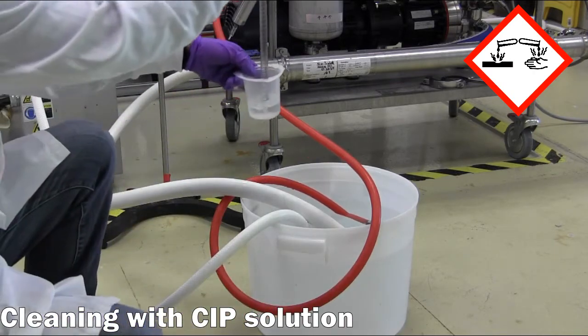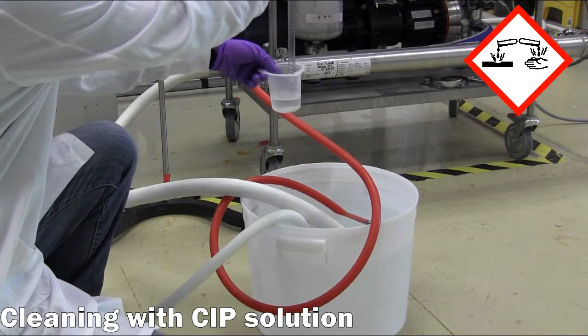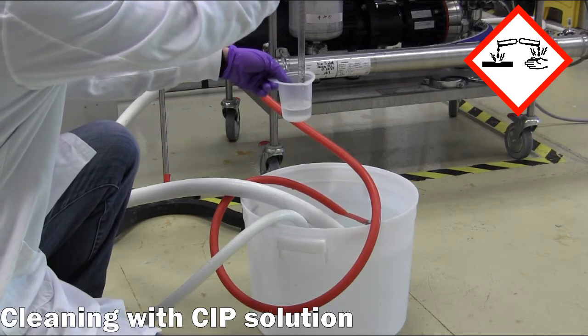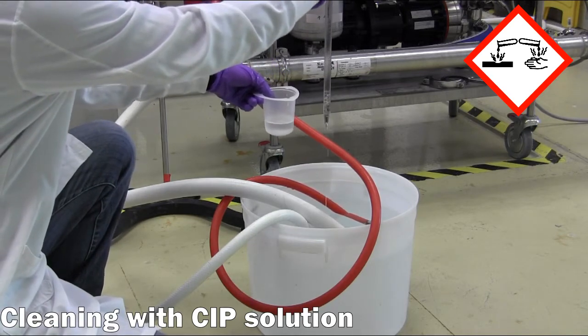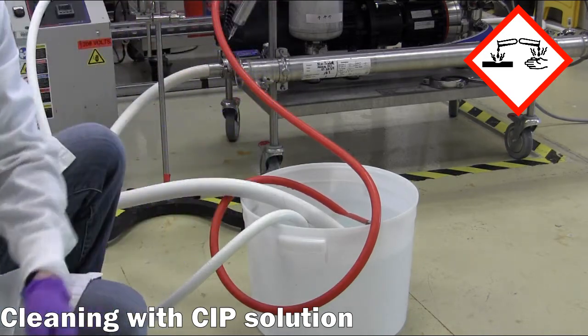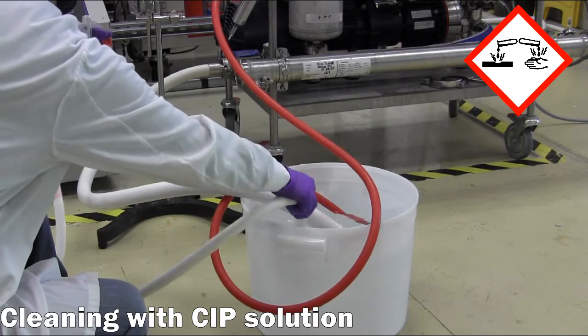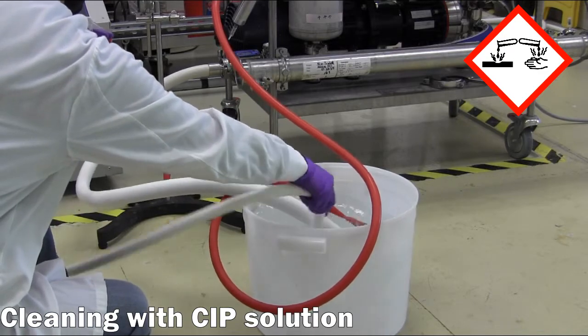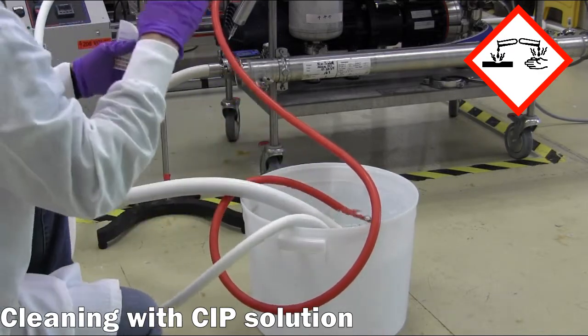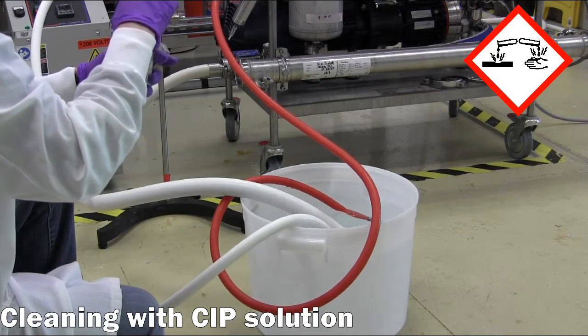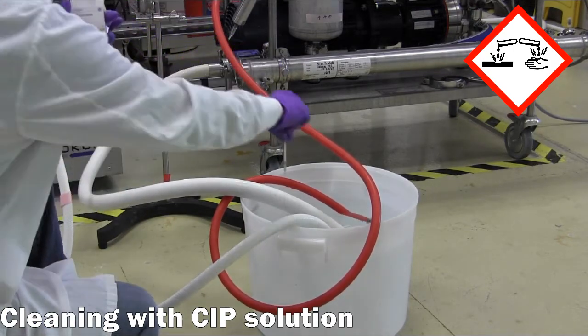First, a high pH cleaning solution is made up by adding a small amount of CIP100 to the water. Be mindful of the hazards of working with caustic solutions. A pH test strip can be used to verify that the pH is around 11.